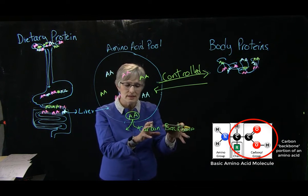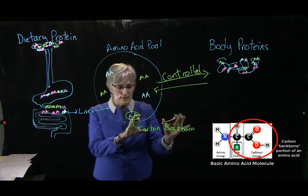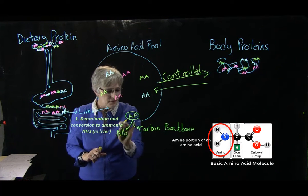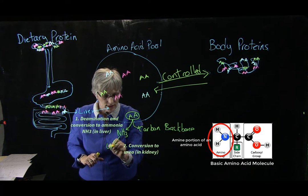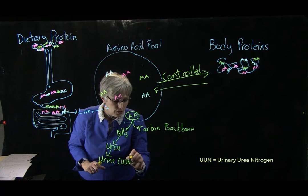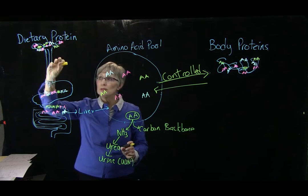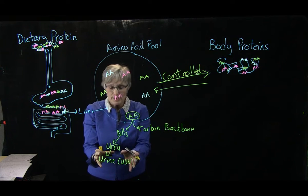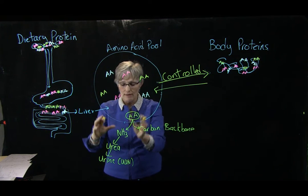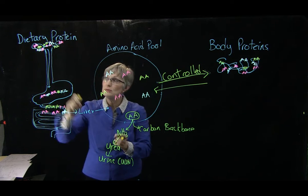With the carbon backbone, we can use it for energy, convert it to glucose, or convert it to body fat — that's our basic metabolism for extra amino acids. For the nitrogen portion, we take it off through deamination, convert it to urea, and excrete it in the urine. This is measurable as urinary urea nitrogen. More dietary protein leads to more urinary urea; less protein leads to less. We can use this relationship to assess protein status.